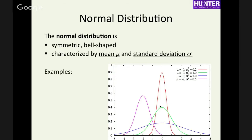When it comes to describing a normal distribution, it's pretty typical to describe the variance. When talking about distributions of a population like this, variance is commonly used. When we talk about sampling distributions — which won't come until after the exam — we'll usually talk about standard error, which is like a standard deviation. But both are totally typical and fine.